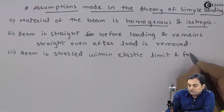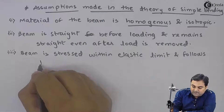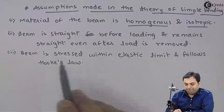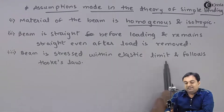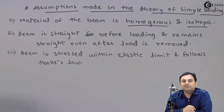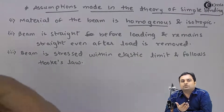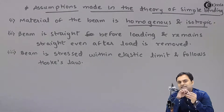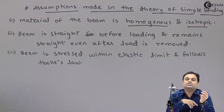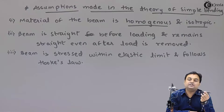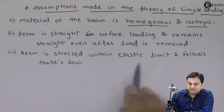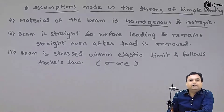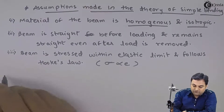The third assumption is that the beam follows Hooke's law — that is, stress is directly proportional to strain within the elastic limit. The beam is stressed within the elastic limit and follows Hooke's law.